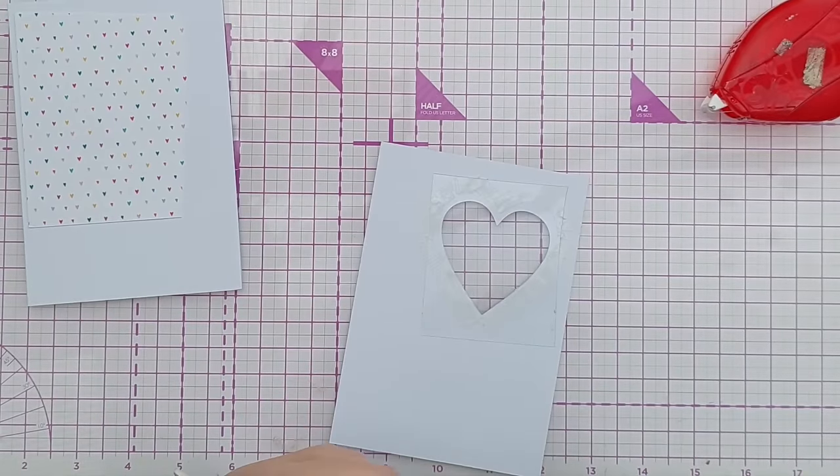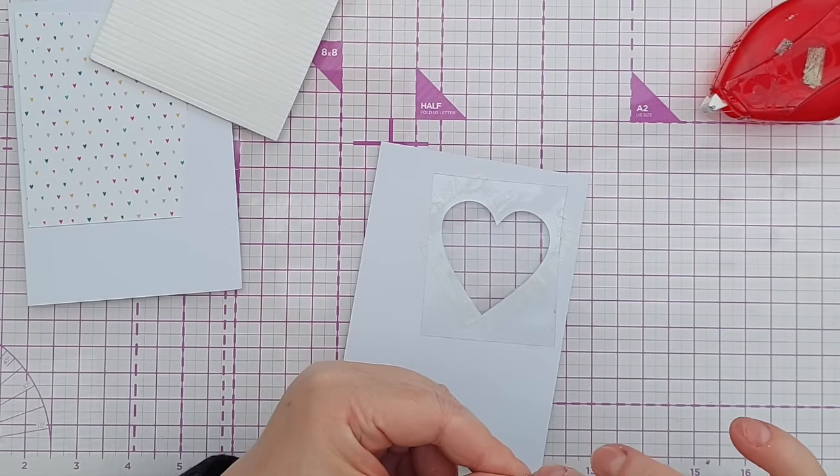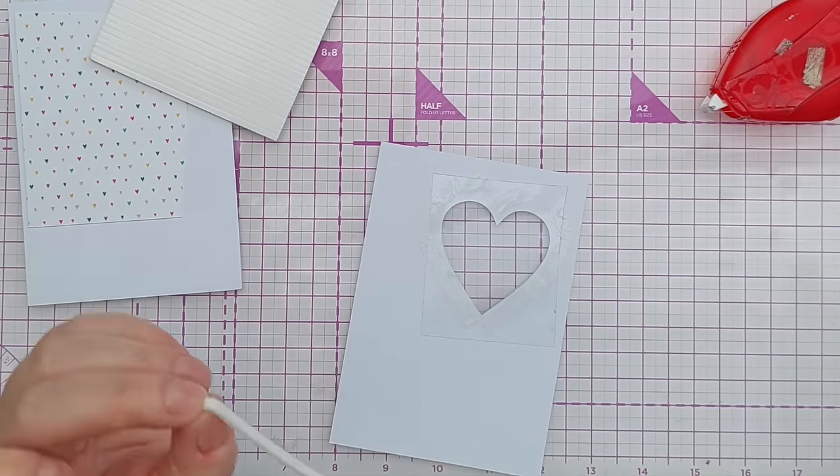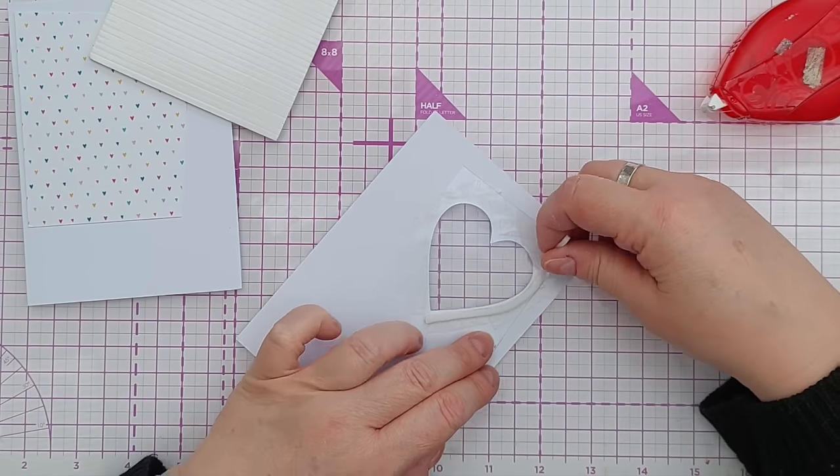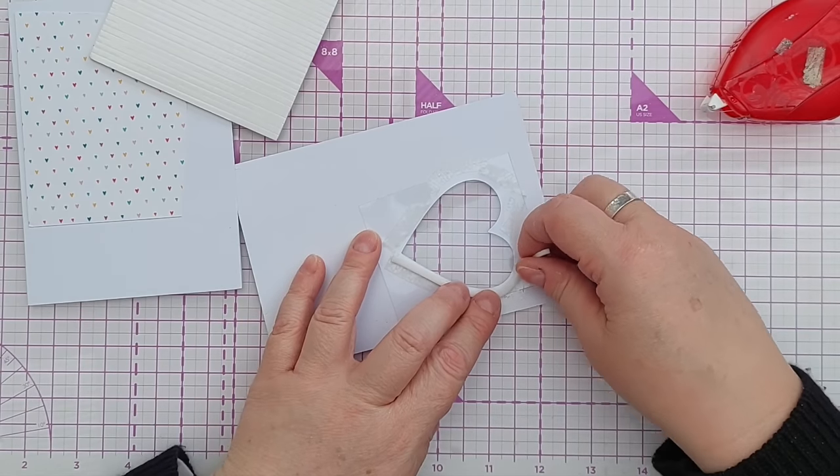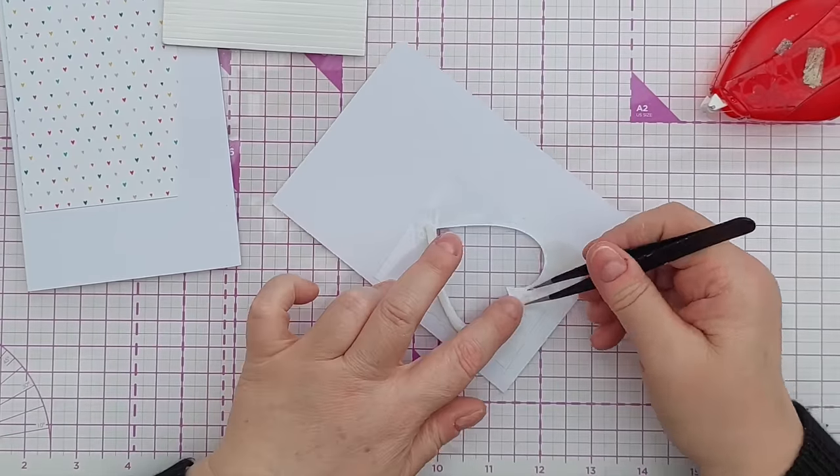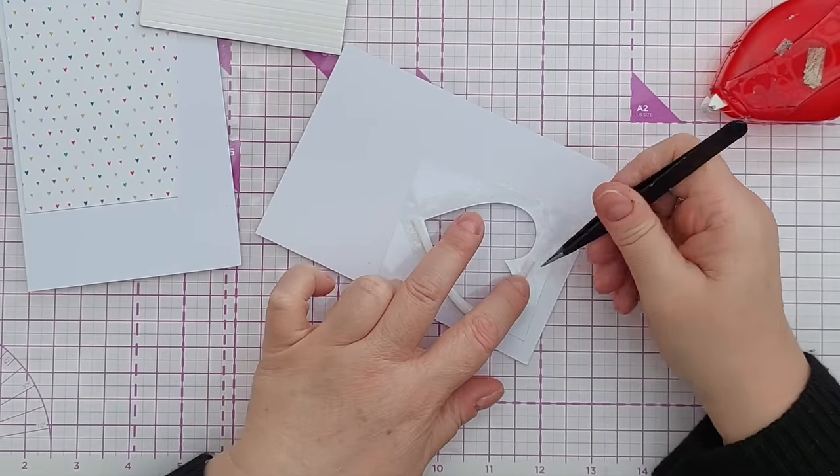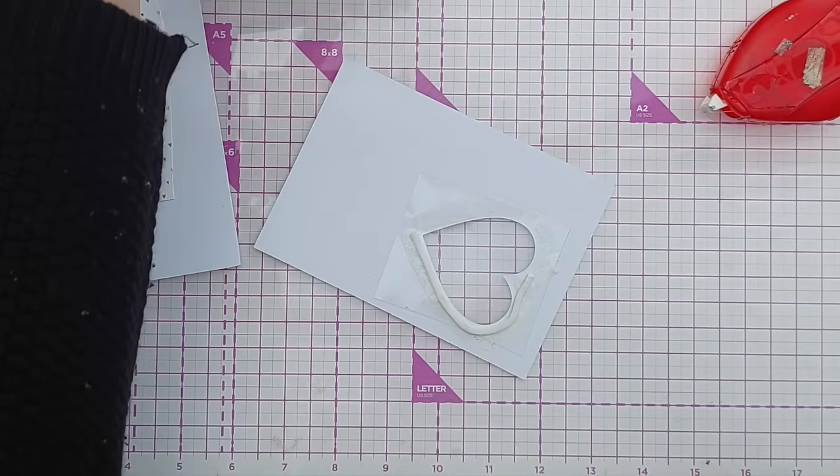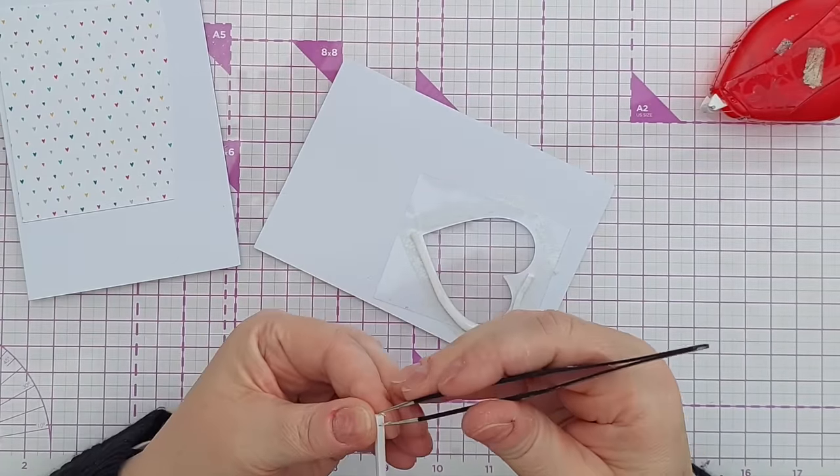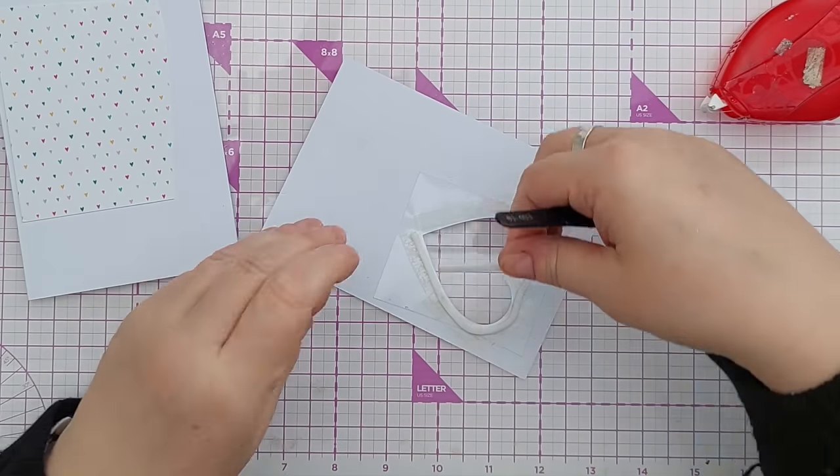And now I want to add some strips of foam tape around my aperture to create that little bit of dimension. The easiest way to curve foam tape is to take the release paper off of both sides before you stick it down because it's the paper that prevents it from curving.